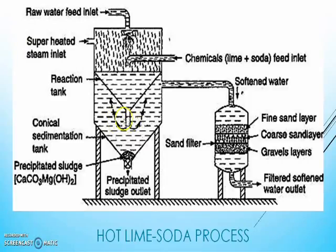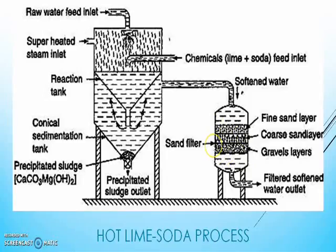When this water comes into the sedimentation tank, the precipitates settle down rapidly, and hence no coagulants like alum or sodium aluminate are required. As the viscosity of the soft water is lower, filtration of water becomes much easier when water passes through the sand filter. And finally, we will get filtered soft water.